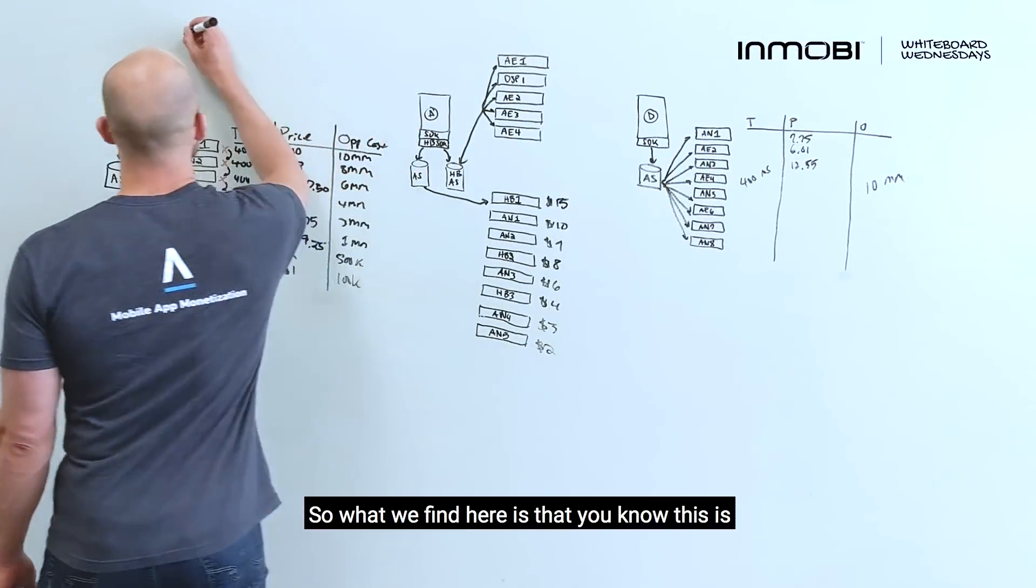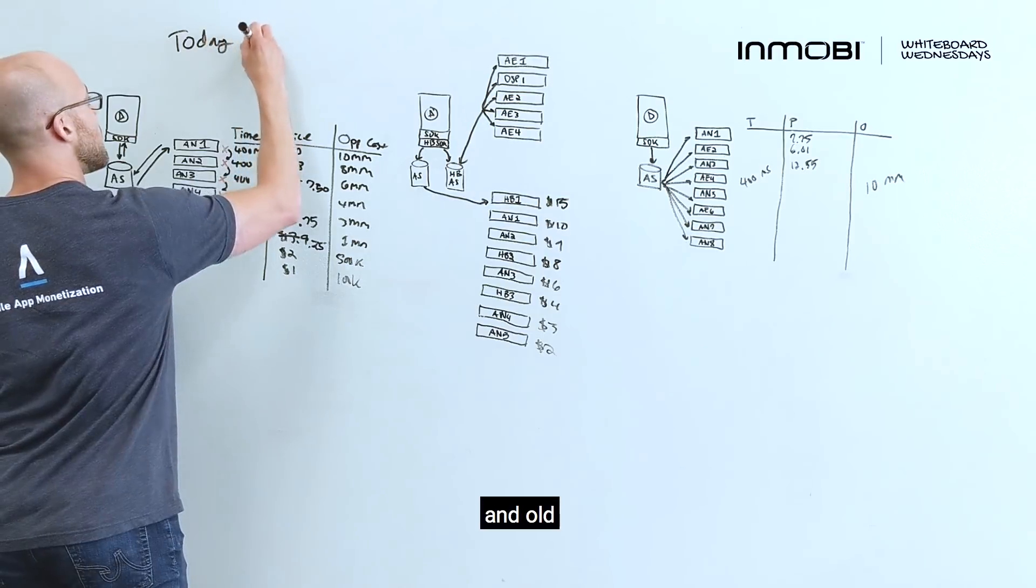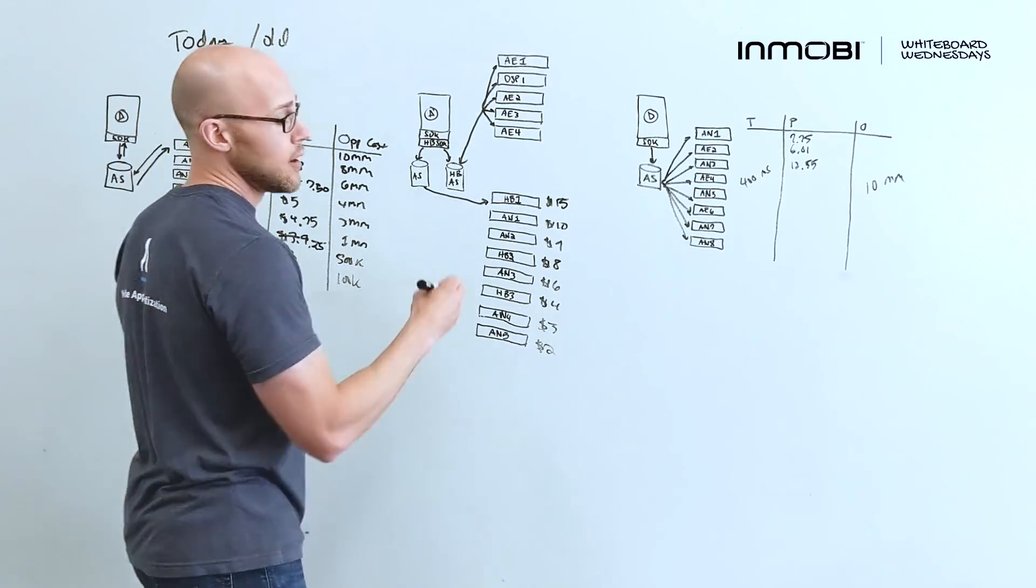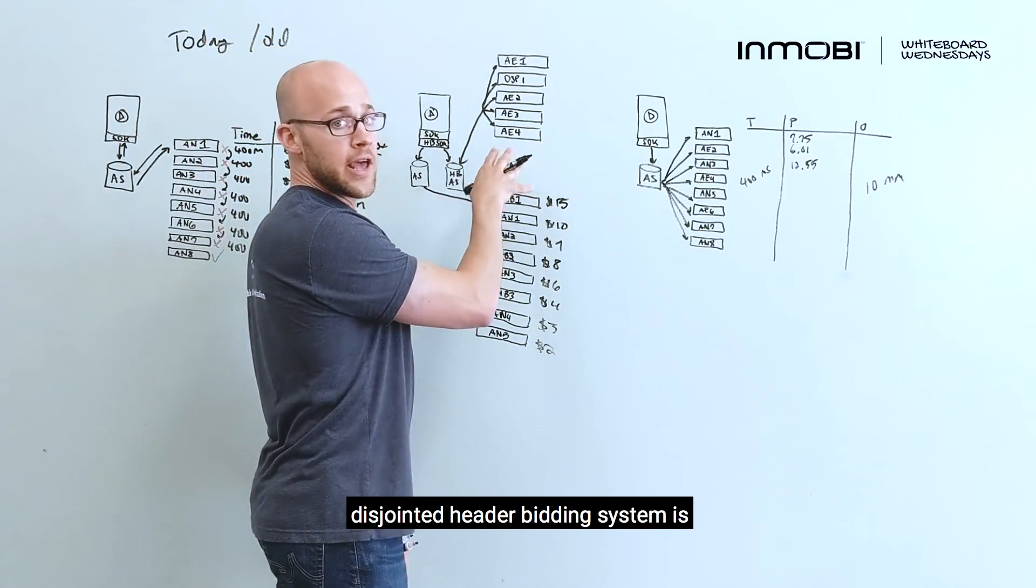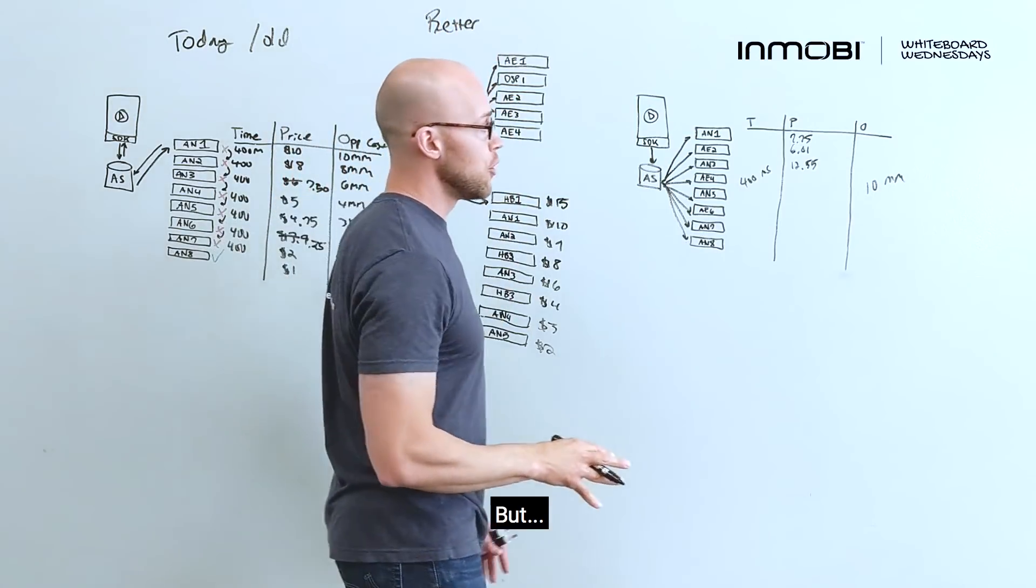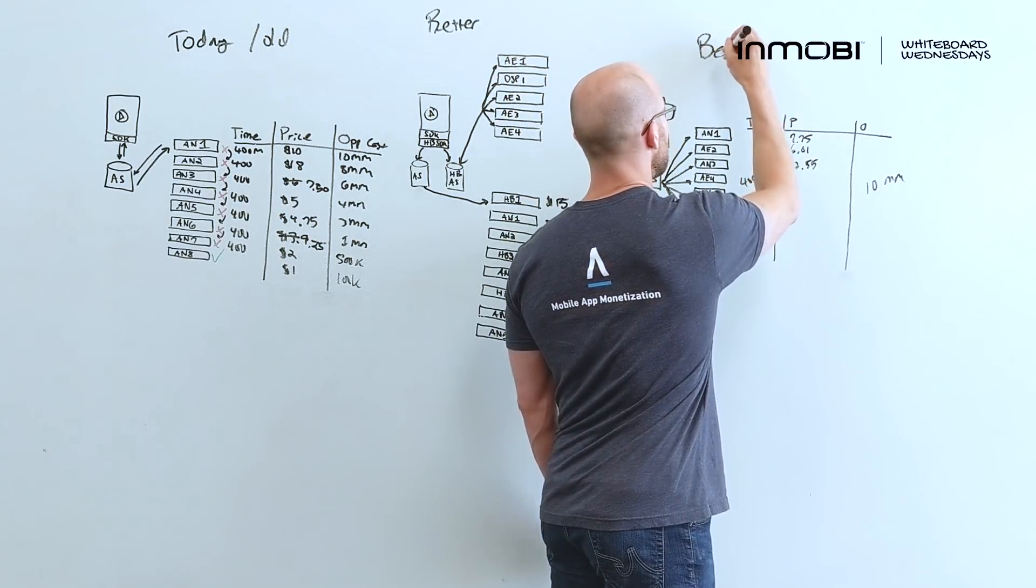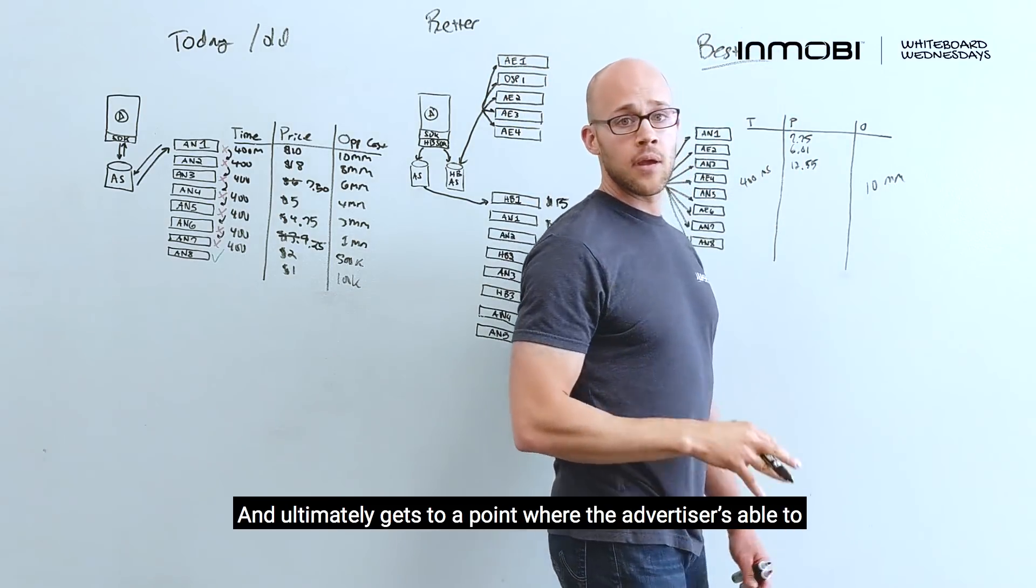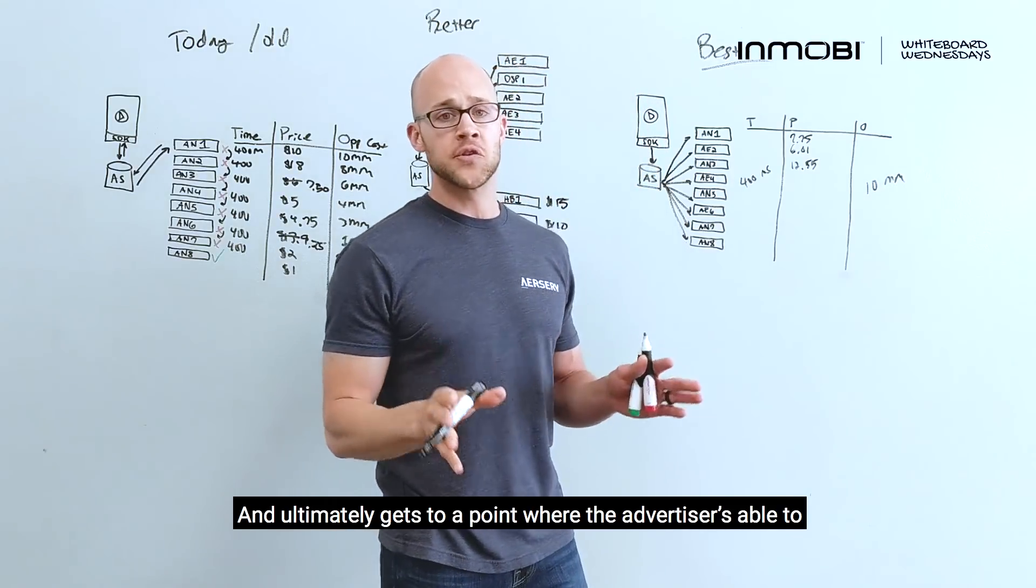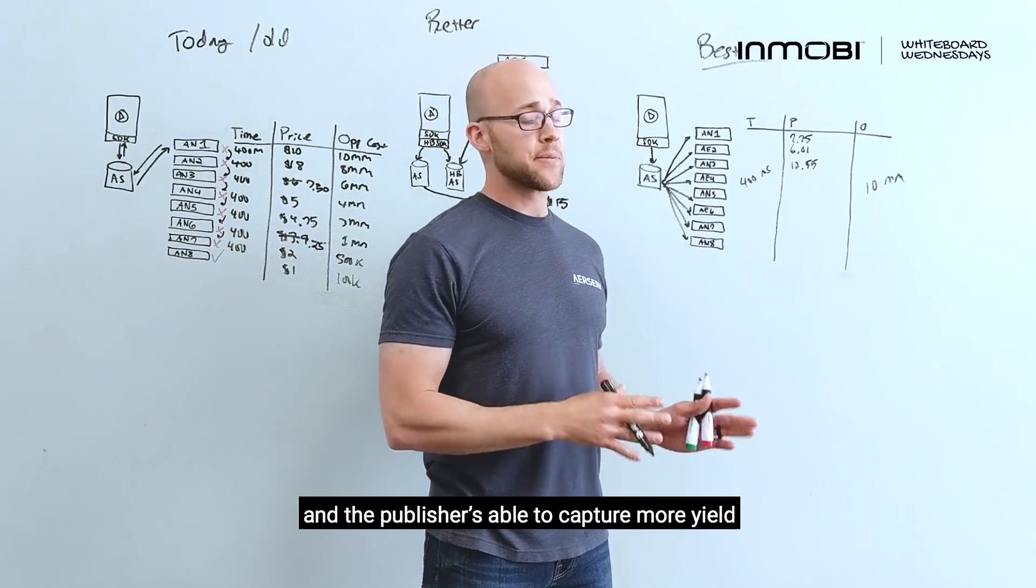So, what we find here is that this is today and old. The disjointed header bidding system is better, but we feel that unified auction is best. And ultimately, gets to a point where the advertiser is able to monetize more inventory, and the publisher is able to capture more yield.